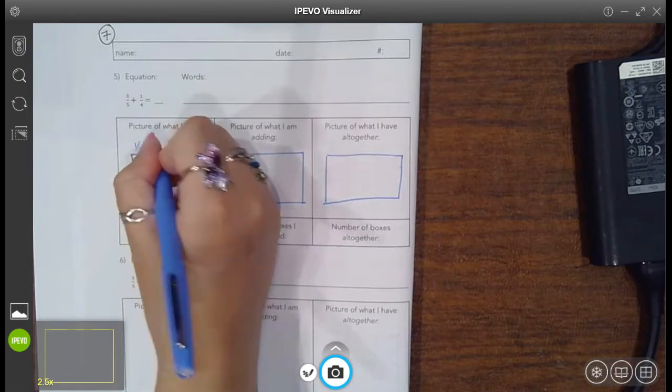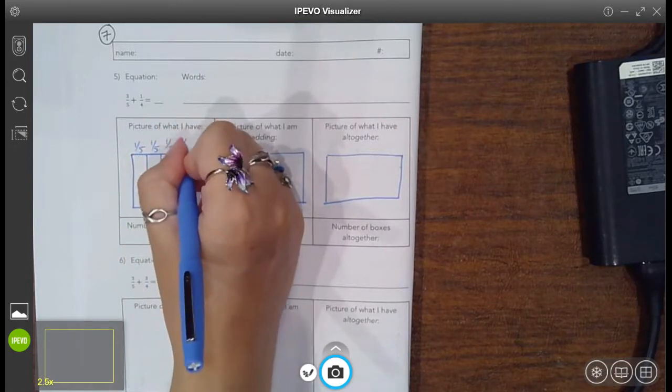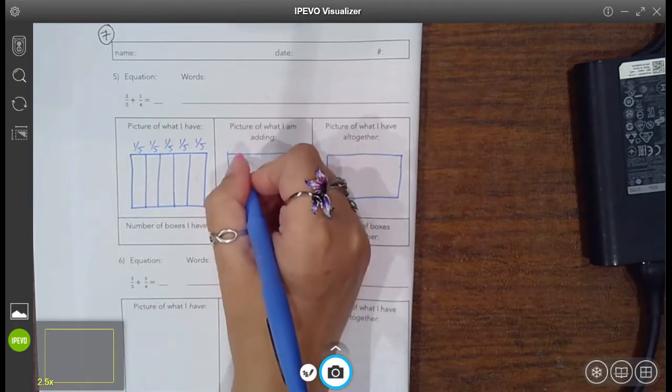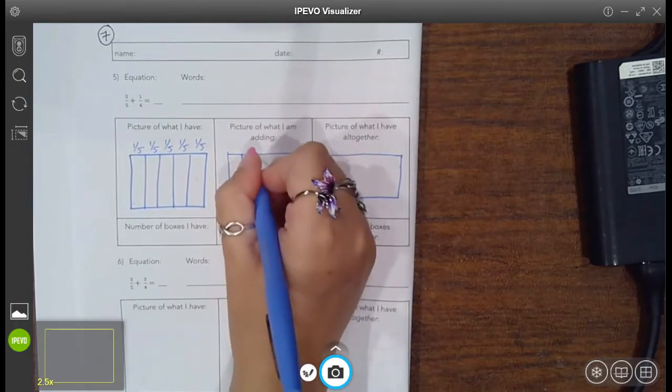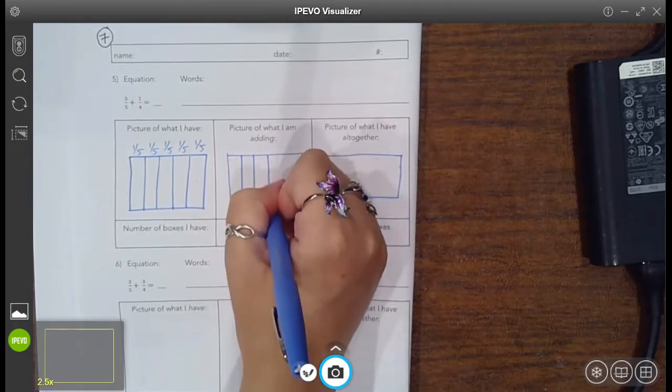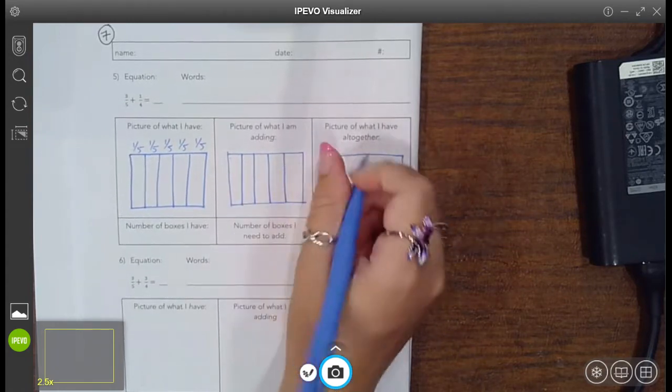One, two, three, four, five equal pieces. So that each of these is worth one-fifth, right? Okay, so let's break all of them into five pieces. One, two, three, four, five.